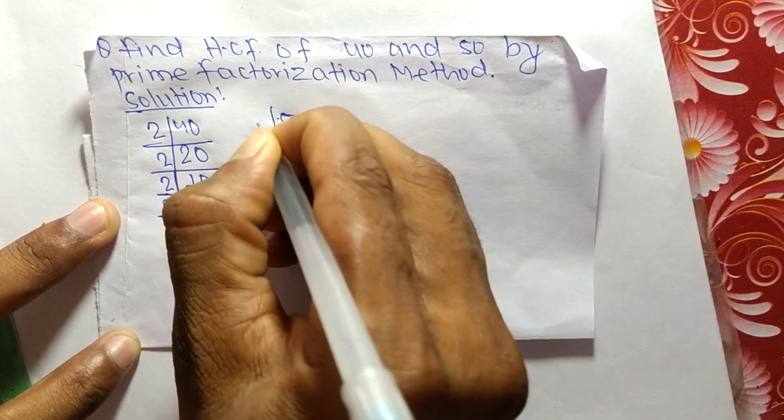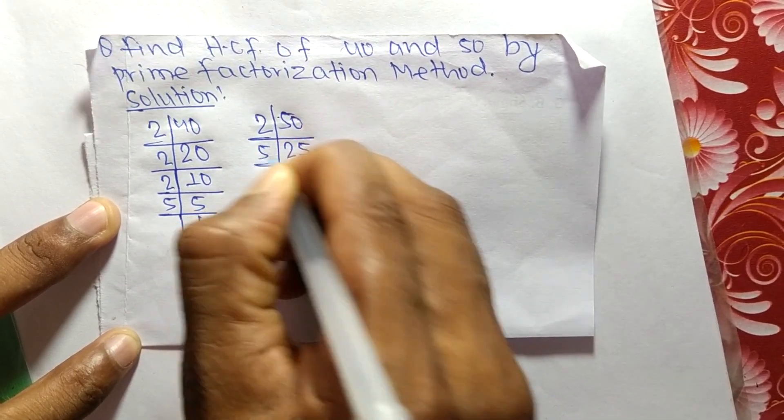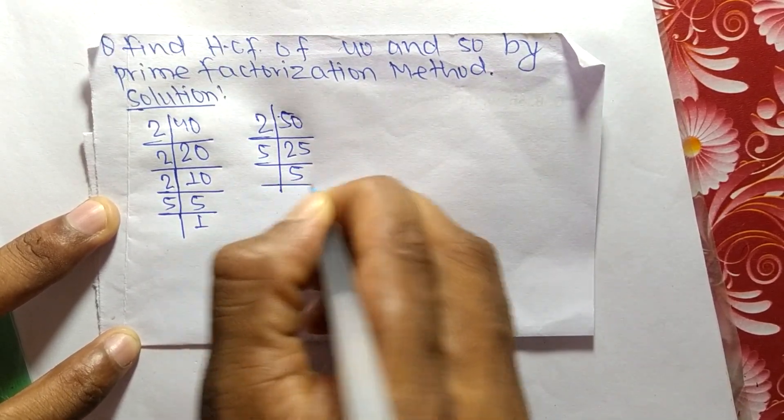The prime factors of 50 are: 2 times 25 equals 50, 5 times 5 equals 25, and 5 times 1 equals 5.